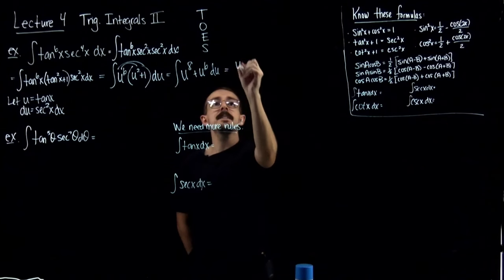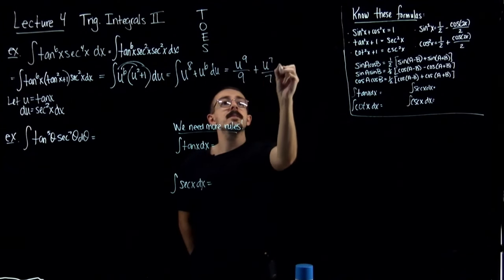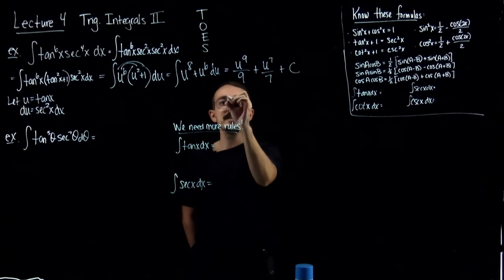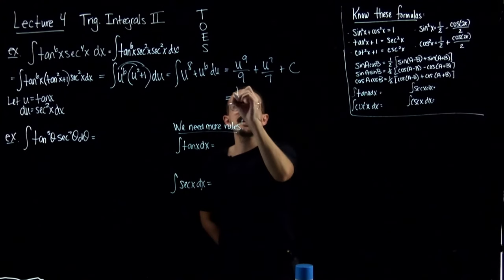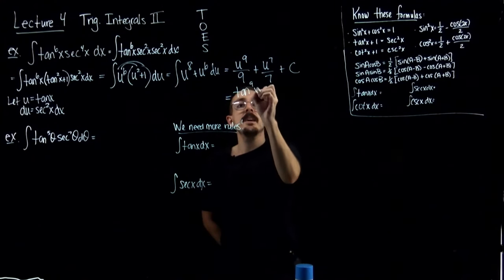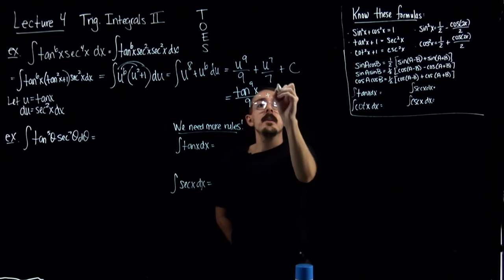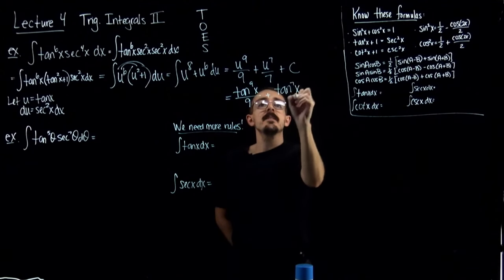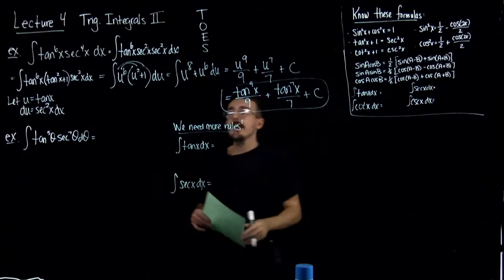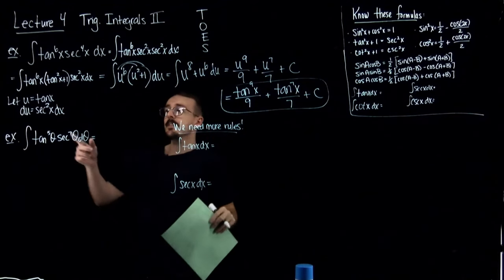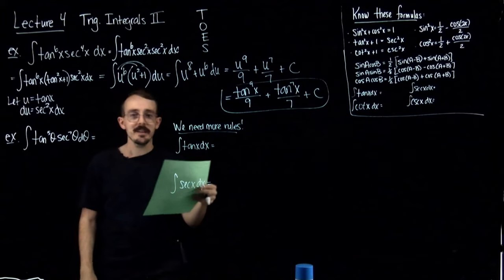If I integrate that, I get u to the 9th over 9 plus u to the 7th over 7 plus C. So I've successfully integrated it, and I just need to plug back in u. Since u is tangent, I have tangent to the 9th over 9 plus tangent to the 7th over 7 plus C.